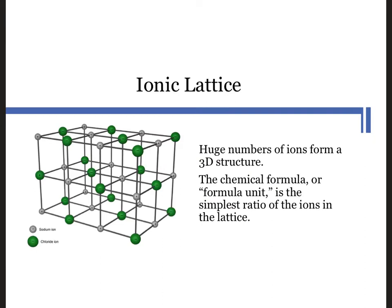Individual pairs of ions do not bond together to form discrete units. Rather, huge numbers of both types of ions form a three-dimensional lattice. The lattice is held together by the electrostatic attractions between the oppositely charged cations and anions. The chemical formula of an ionic compound indicates the simplest ratio of the types of ions in the lattice and is called a formula unit, not a molecule.